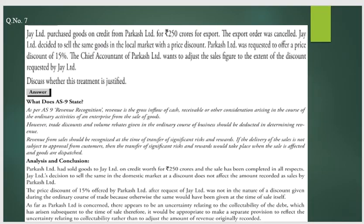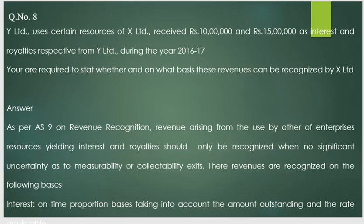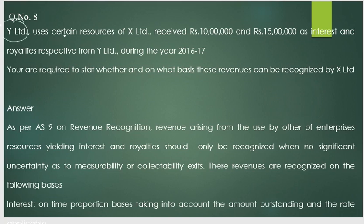That is the meaning of sale under AS-9. The remaining theory paragraph can be read separately. Question number eight is again the same type as question one: X Limited uses certain resources of Y Limited — 10 lakh and 15 lakh as interest and royalty.